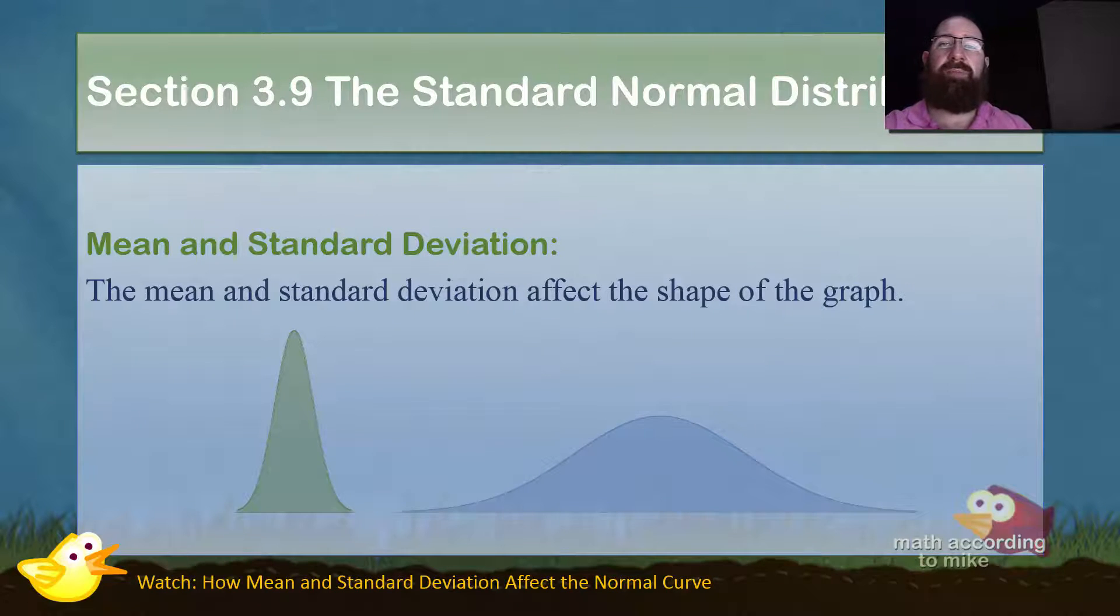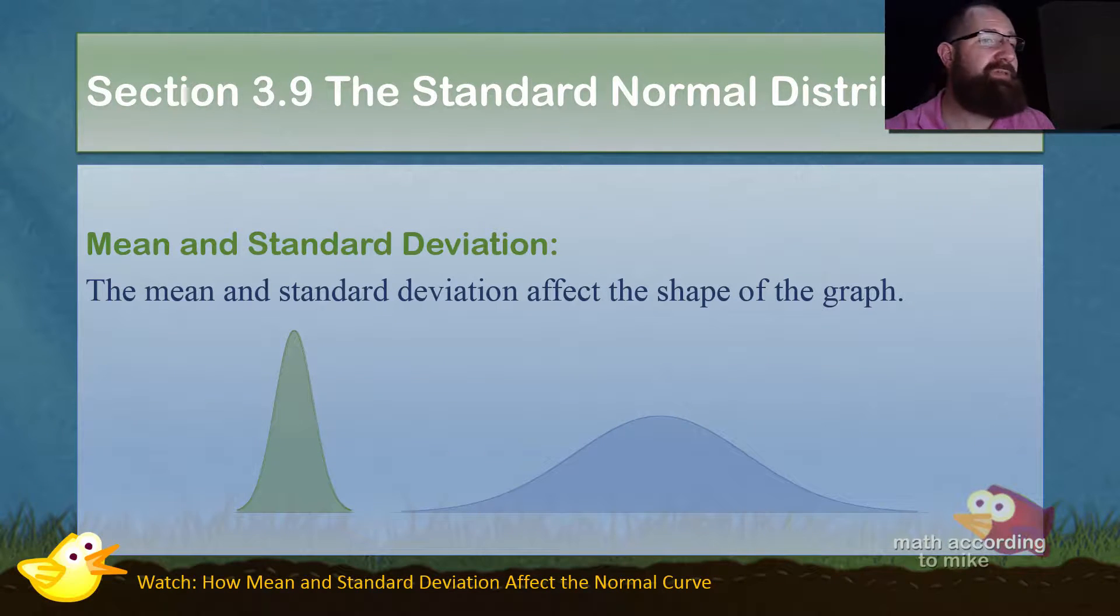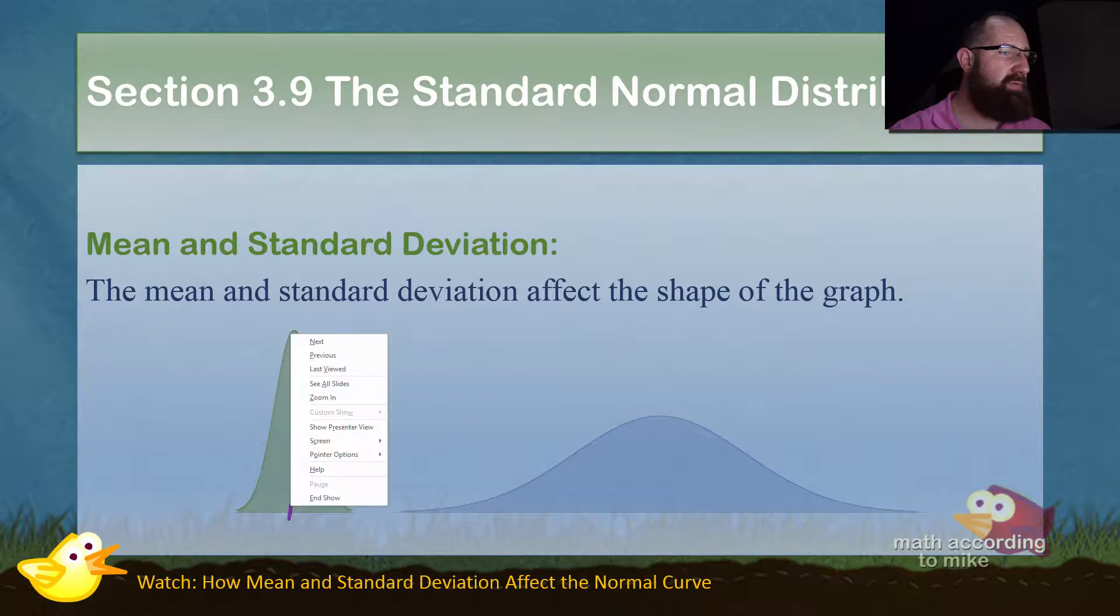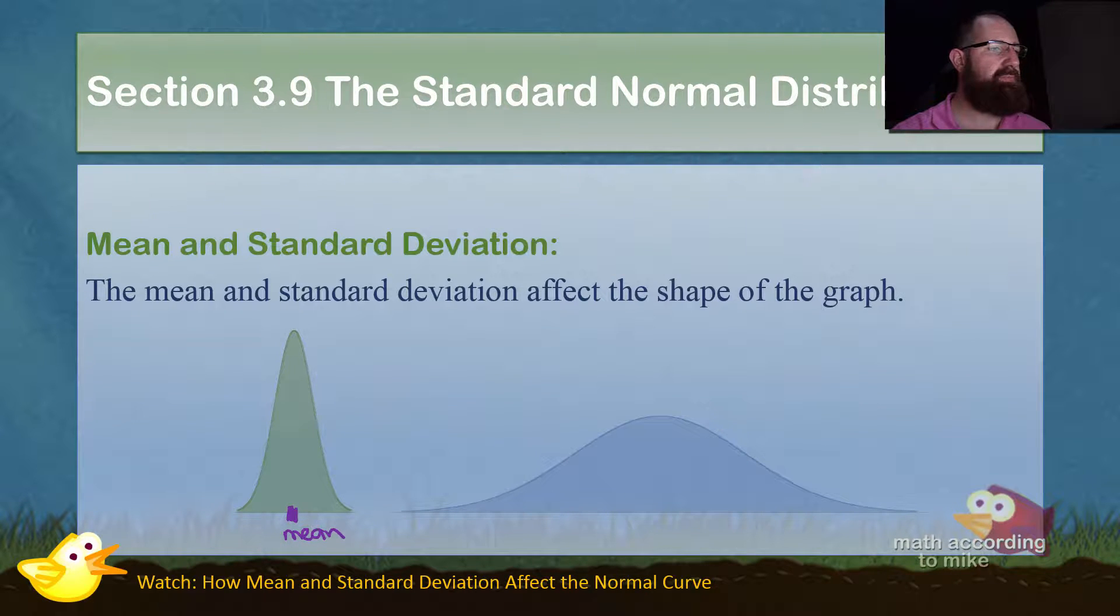Now, as far as the shape of the curve itself, the bell curve, there are two numbers that affect it, your mean and your standard deviation. The mean is located in the center of the graph. Right there is the mean. So for the blue one over here, the mean's about right there. So the mean tells you the center of the graph.